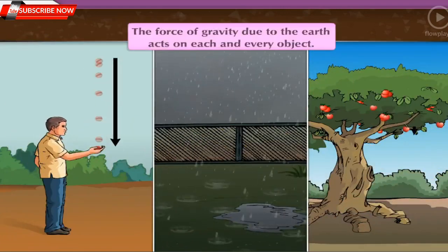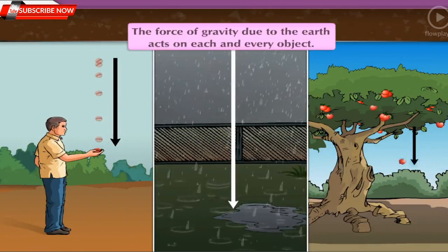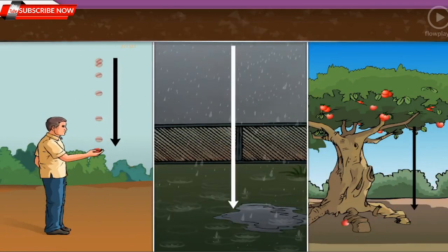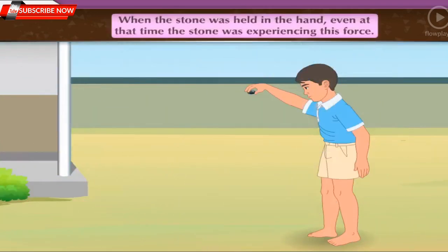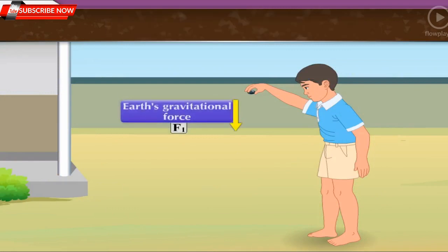We know that the force of gravity due to the earth acts on each and every object. When the stone was held in the hand, even at that time the stone was experiencing this force, but it was balanced by a force applied by us on it in the opposite direction. Consequently, the stone remained at rest.